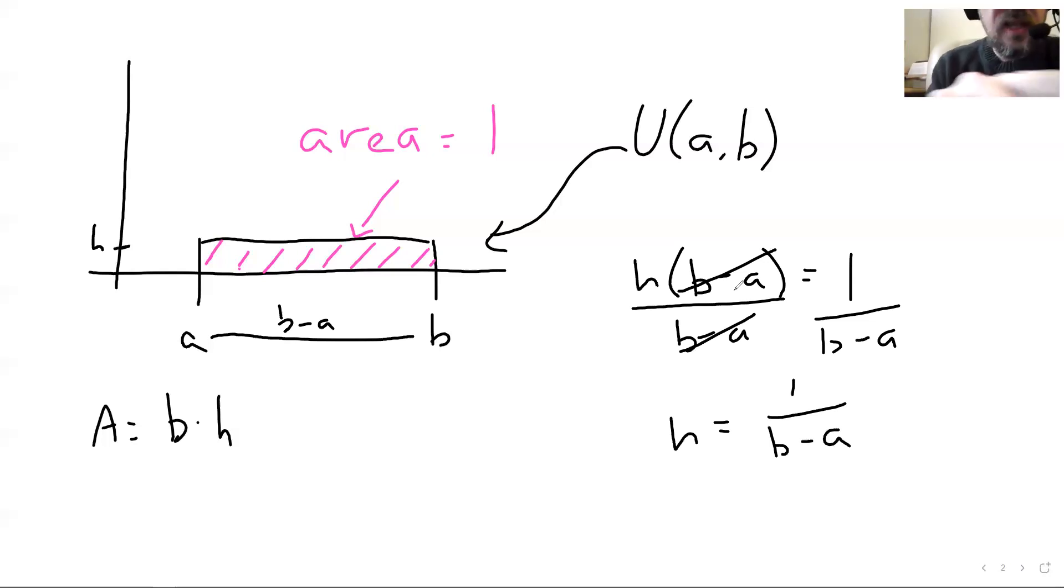Divide both sides by b minus a. We get that the height is one over b minus a. So no matter what a and b are, the height there is one over the length of the base. If a and b are 1 and 7, and the base is therefore 6, then this height is one sixth. That's always how you find the height of uniform distribution.